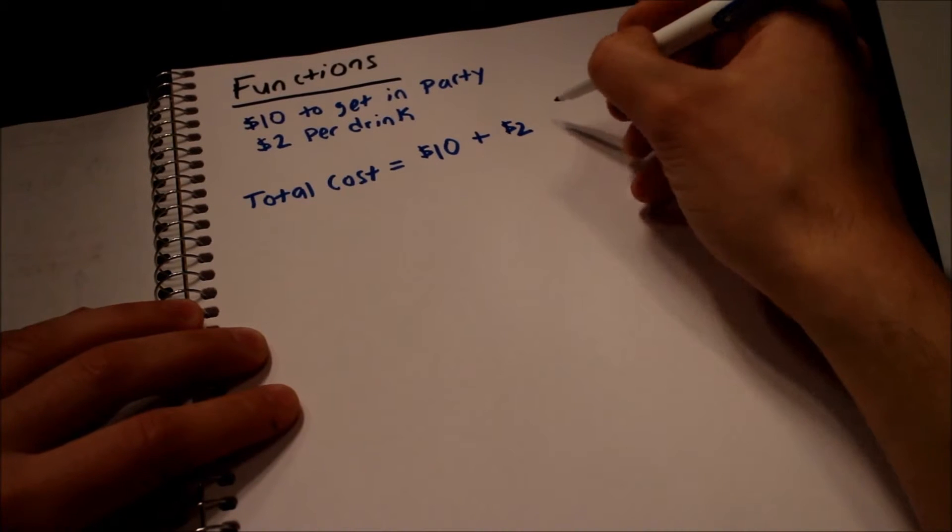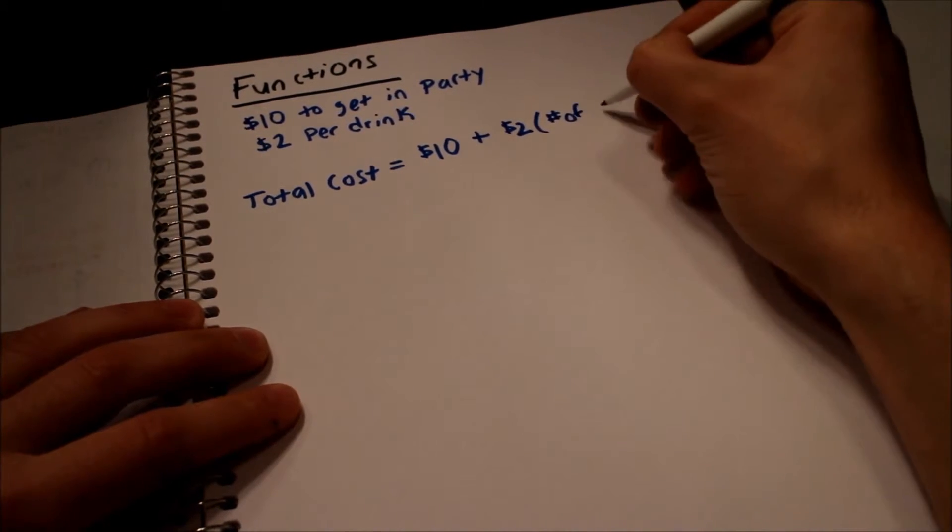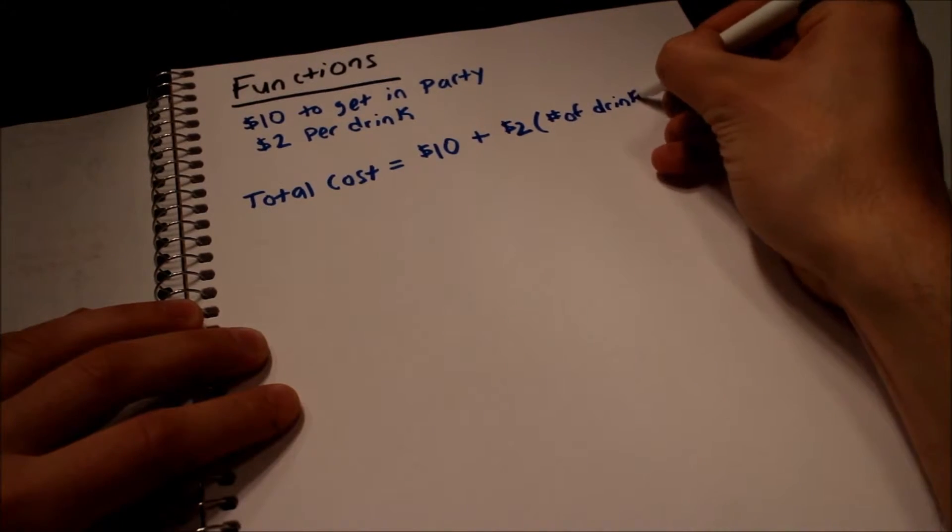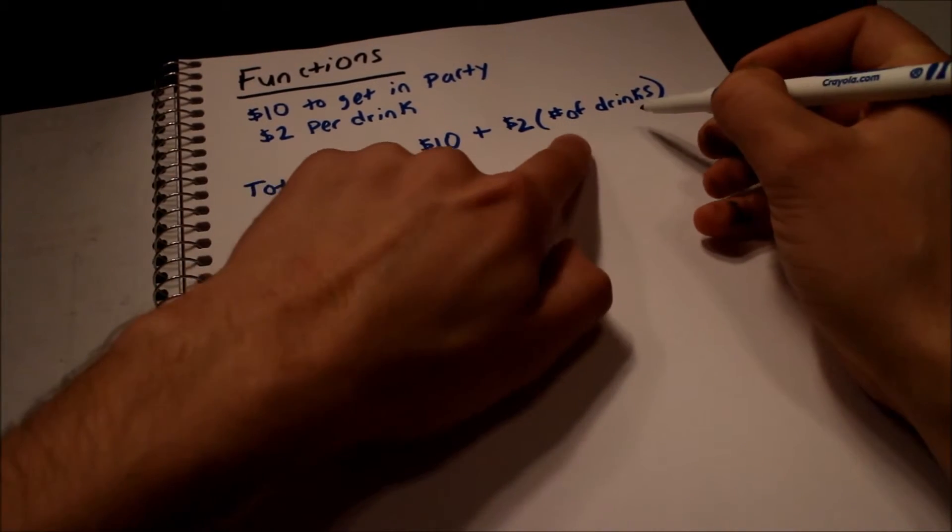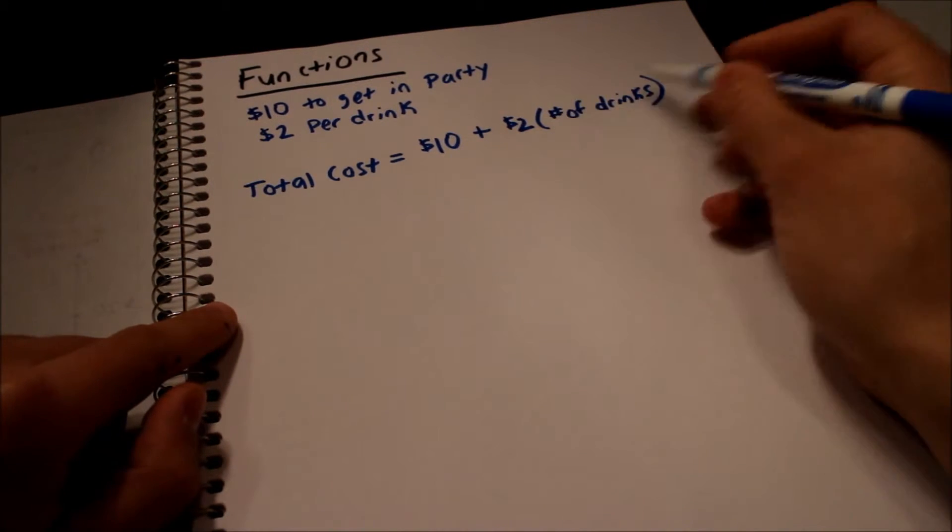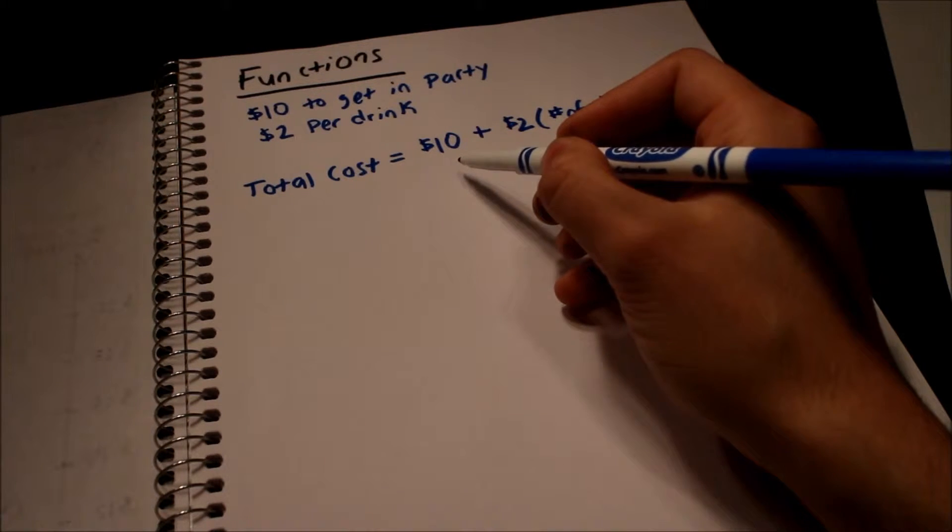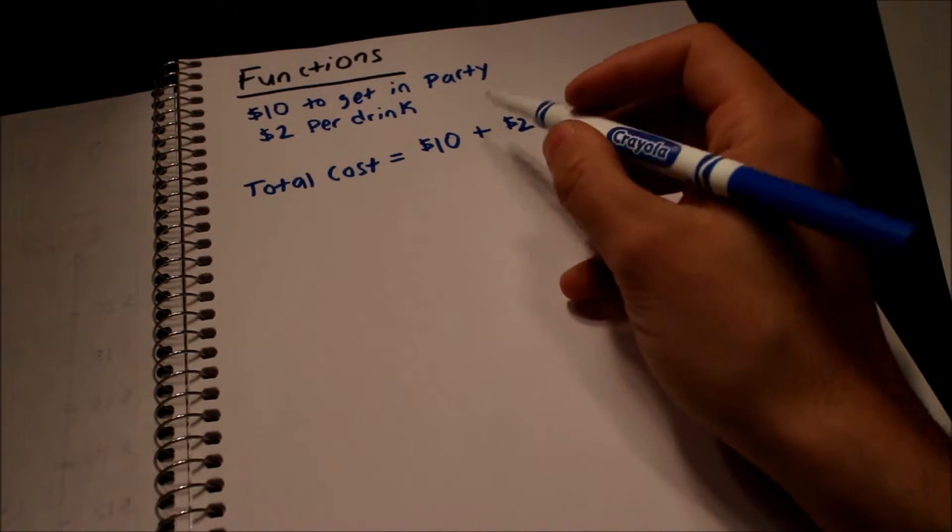That's a two. Two dollars multiplied by the number of drinks that we decide to drink. Because if I had zero drinks, that would be two dollars times zero. That would be gone and we'd just be left with ten dollars. So I wouldn't spend any extra than except for the cover charge to get in my friend's party.